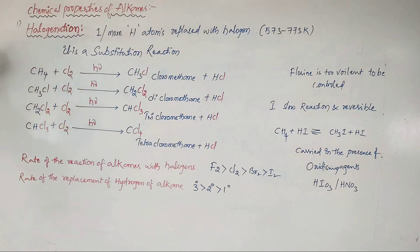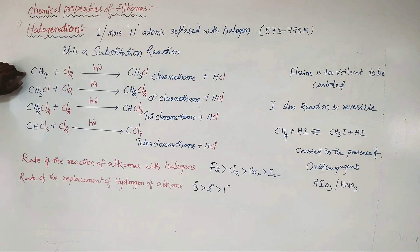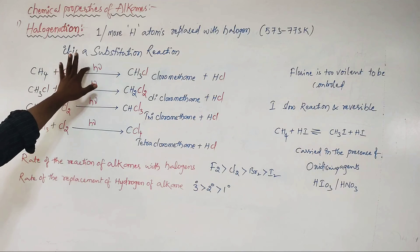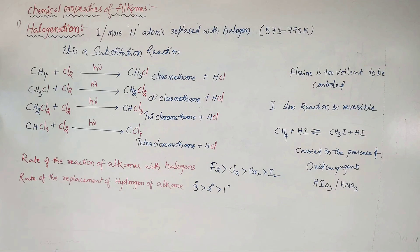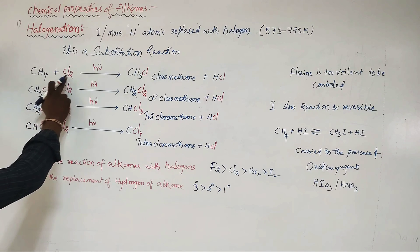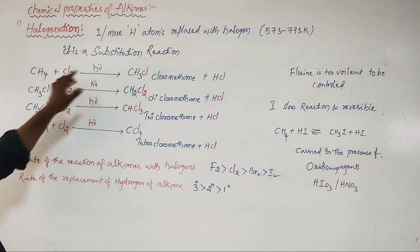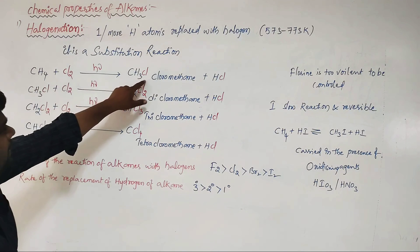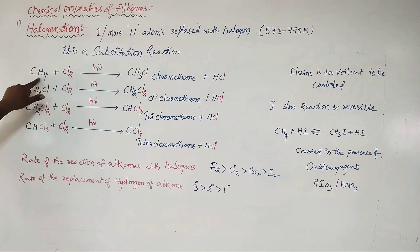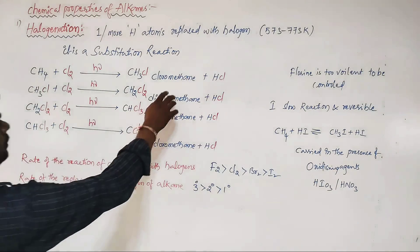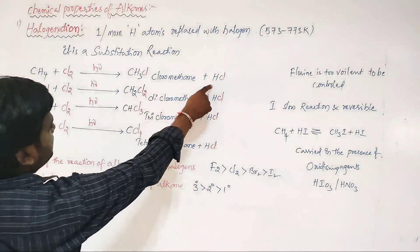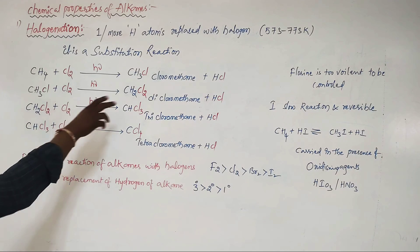For example, CH4 (methane) reacts with Cl2 in the presence of sunlight (hν) — the reaction does not occur without sunlight, as it is a radical-based mechanism. One hydrogen is replaced by one chlorine, giving CH3Cl (chloromethane) plus HCl.